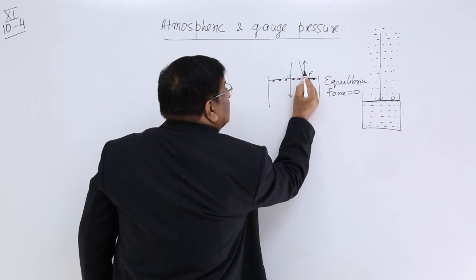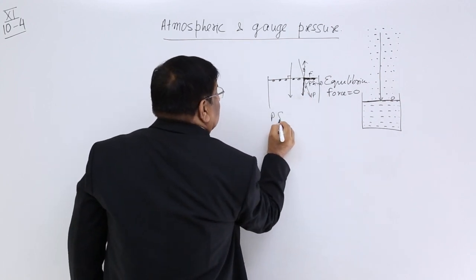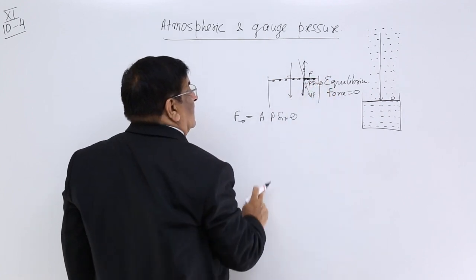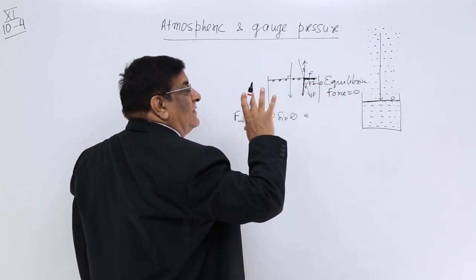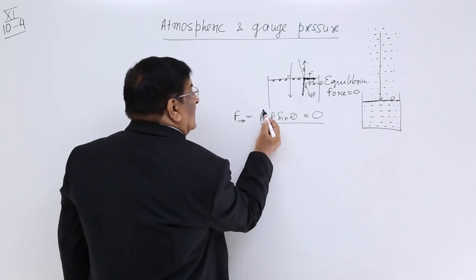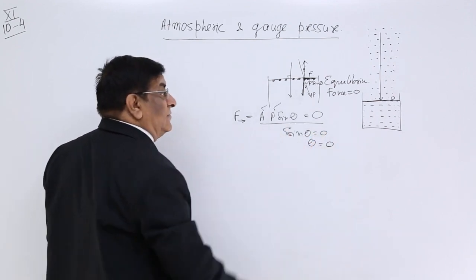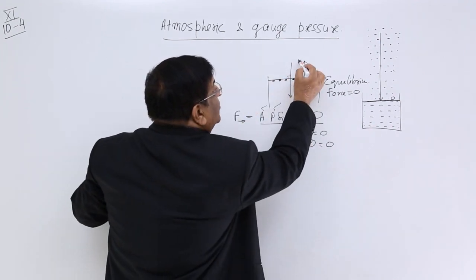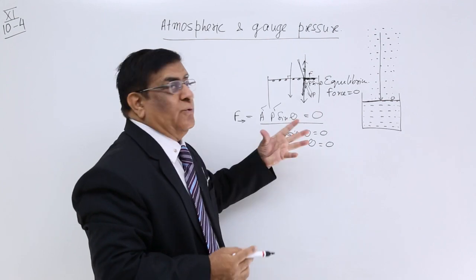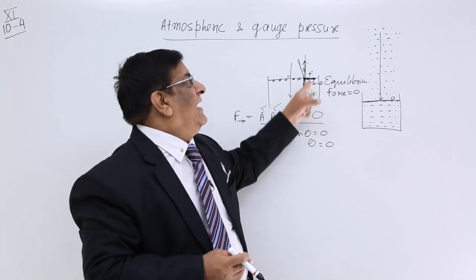If the angle is theta, then the components are P cos theta and P sin theta. So P sin theta multiplied by area gives the force in the horizontal direction. But because these particles are not moving, the acceleration is zero, so this force equals zero. Neither A is zero nor P is zero, so sin theta must equal zero, meaning theta equals zero. If theta equals zero, the pressure must be in the vertical direction — that is, normal to the surface. This is how we prove that pressure always acts in the normal direction. This is atmospheric pressure.